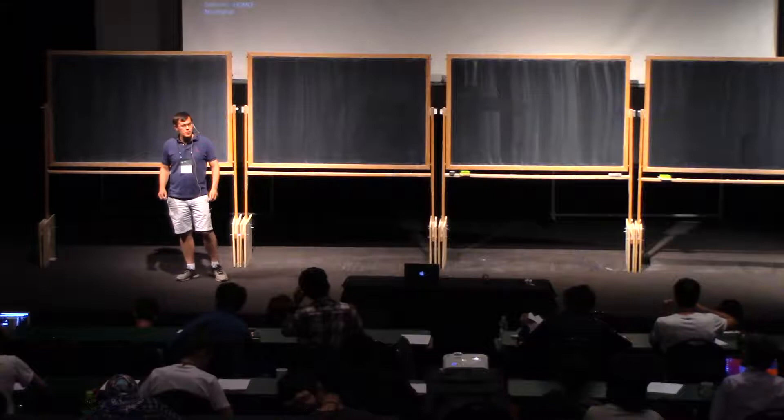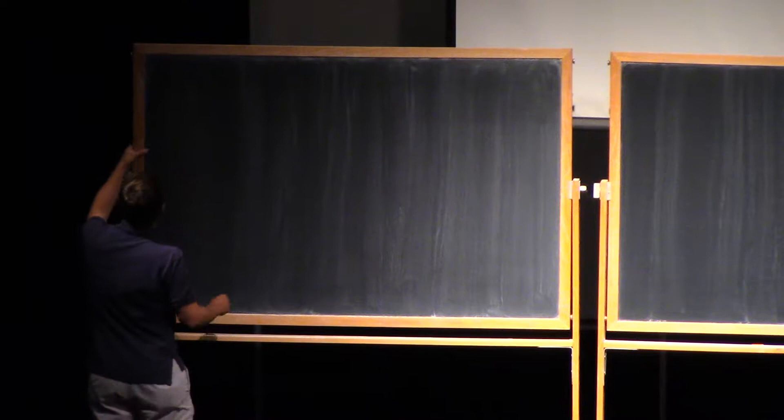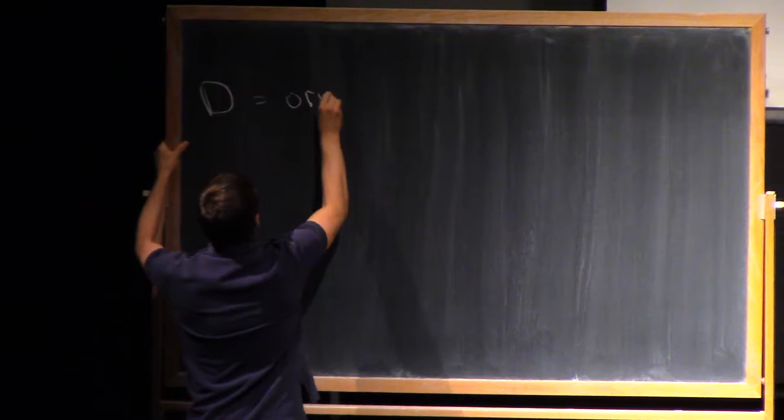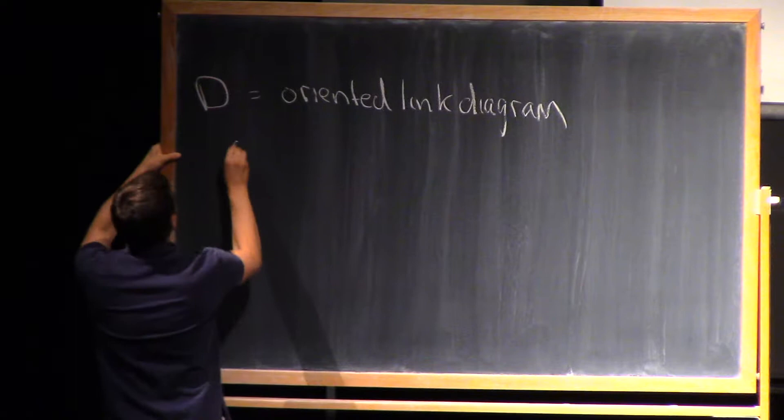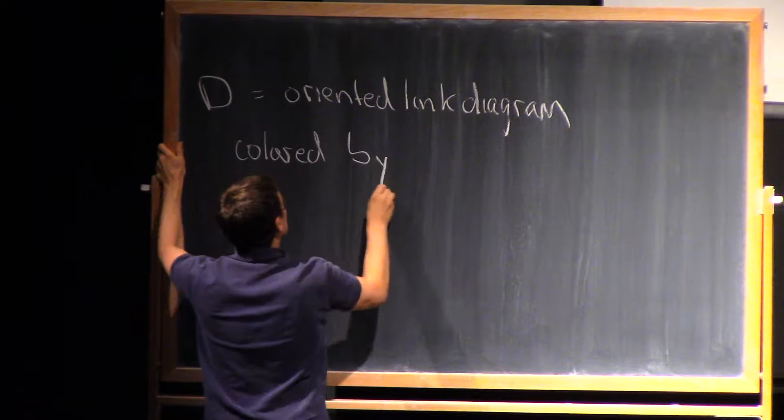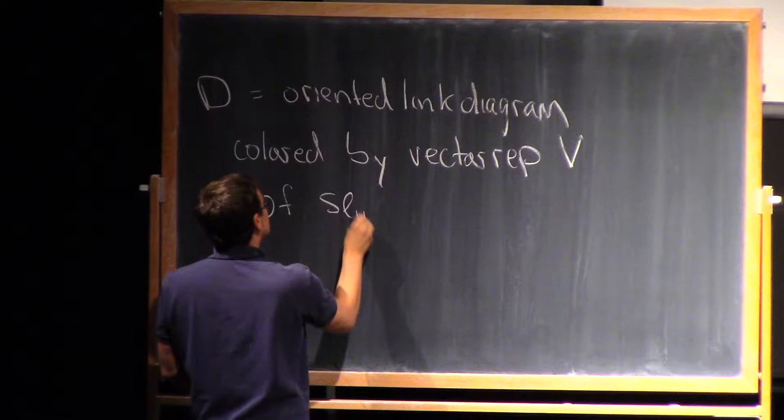So for this last lecture, I'd like to talk a little bit about colored polynomials and colored homologies. But before we start doing that, I'd like to start with looking at what we were thinking about in the last lecture with a slightly different perspective. Let's take D as an oriented link diagram, and say, colored everywhere by the vector representation V of SLN.